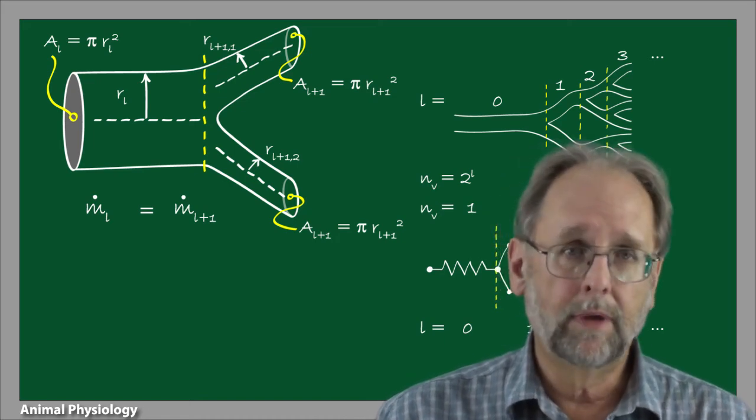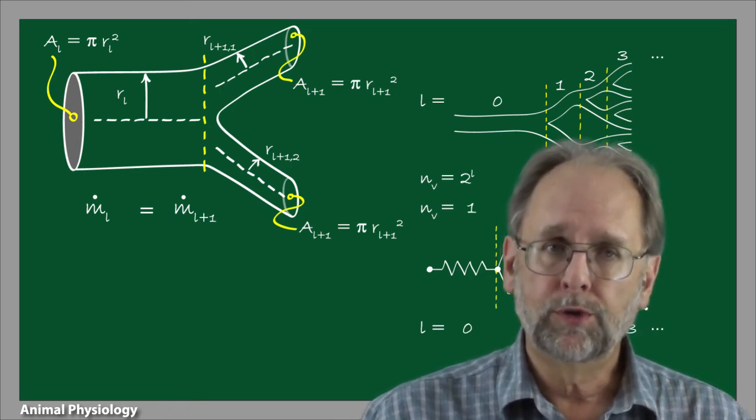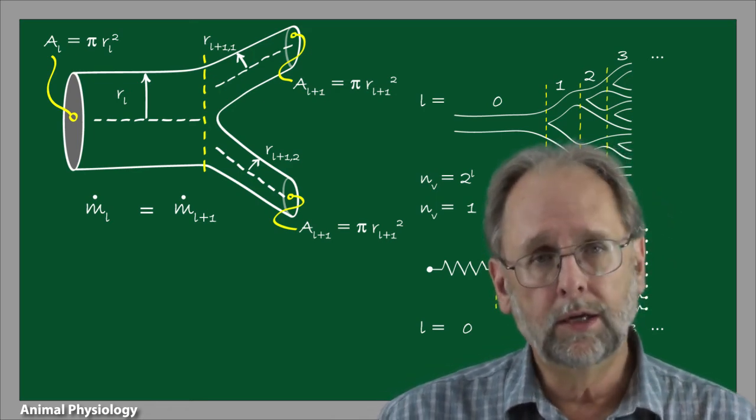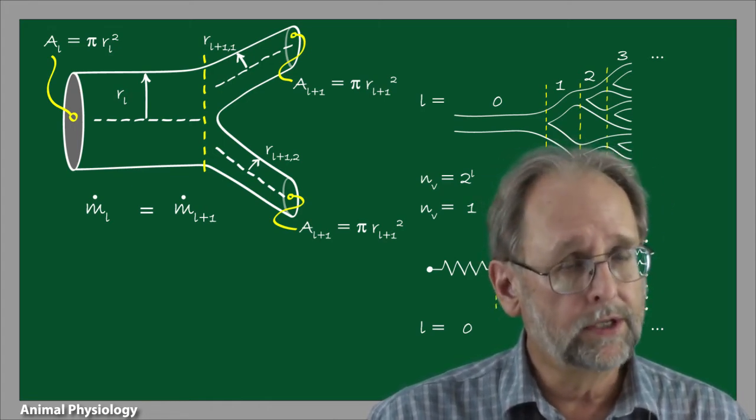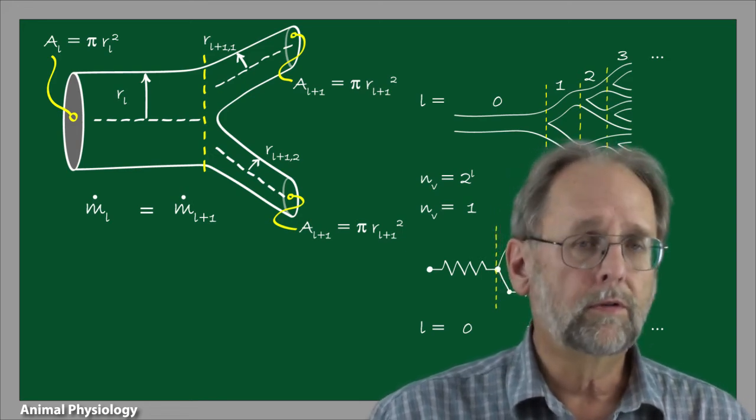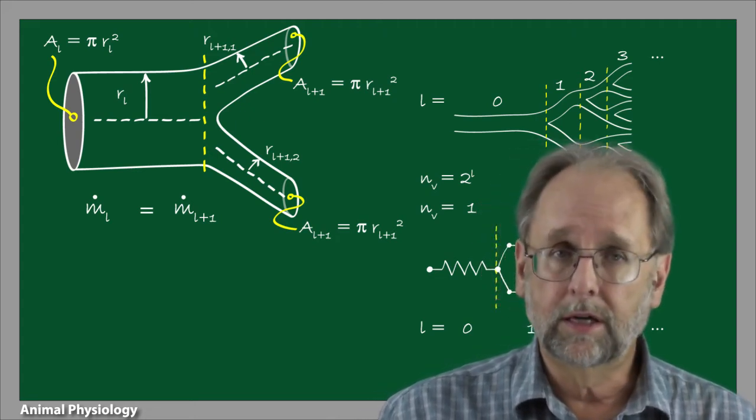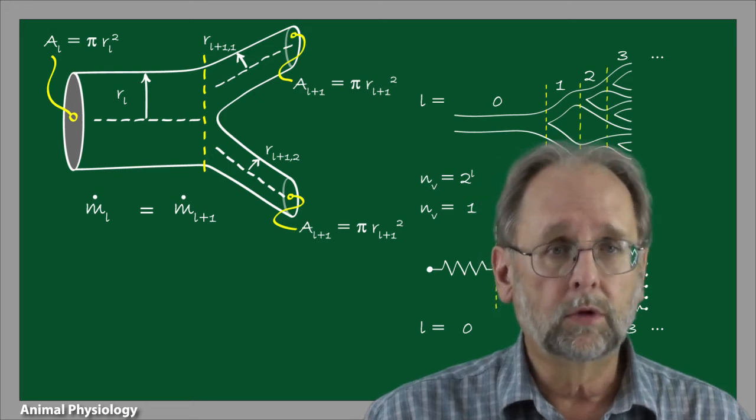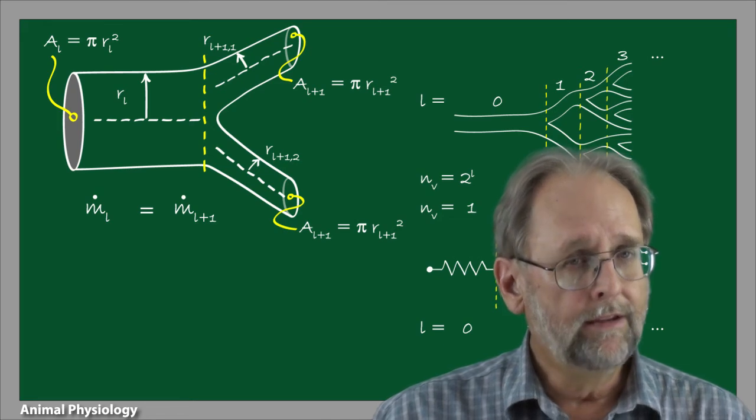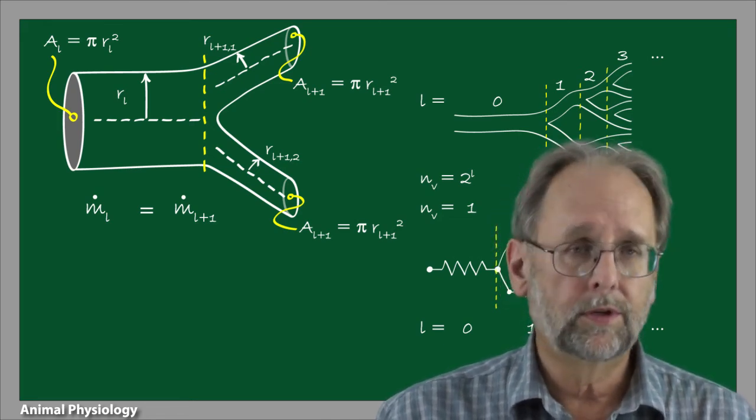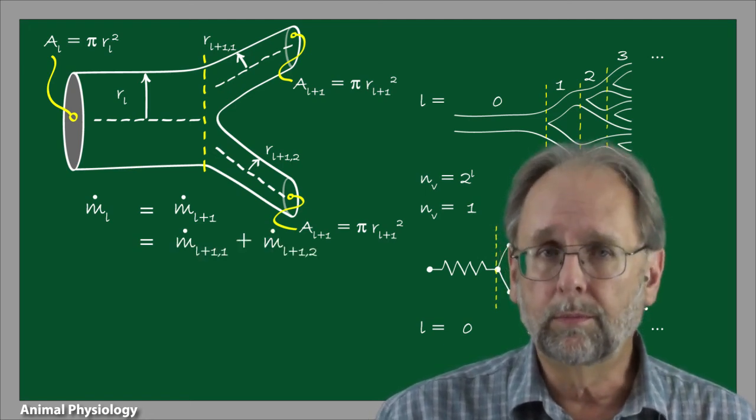We know from the principle of continuity that the mass flux through branching level one must equal the total mass flux through branching level l plus one. With this, we can calculate the mass flow of blood that is carried in each daughter vessel. Specifically, if we suppose that the hydraulic resistances of the two daughter vessels are equal, each daughter vessel will carry one half of the total flow through the parent vessel. There's no reason to suppose, of course, that flows through both daughter vessels have to be equal. If the two daughter vessels have different hydraulic resistances, for example, more blood would flow through the daughter vessel with the smaller hydraulic resistance. Even in this circumstance, though, the principle of continuity is strict. The flow through both daughter vessels must add up to the flow through the parent vessel.